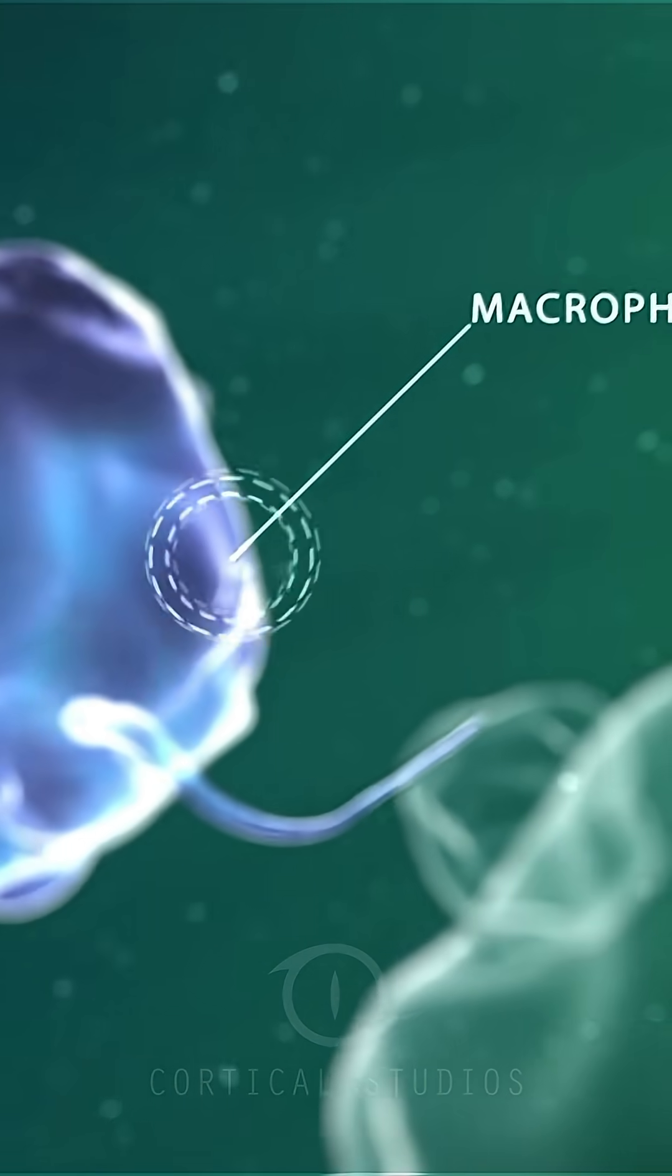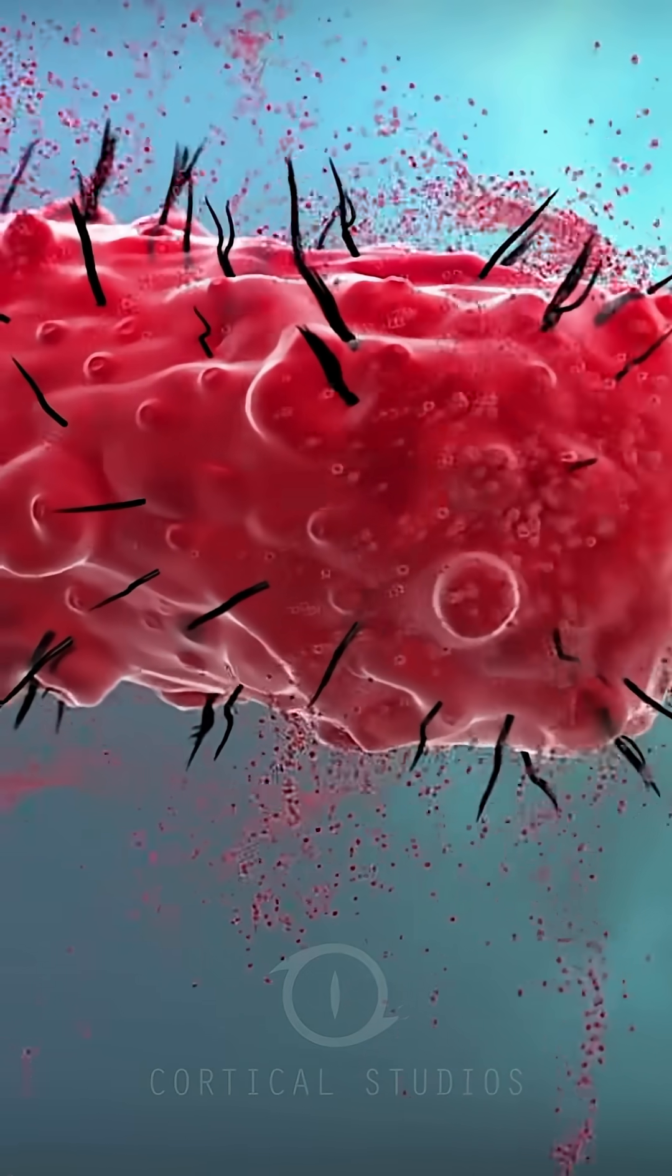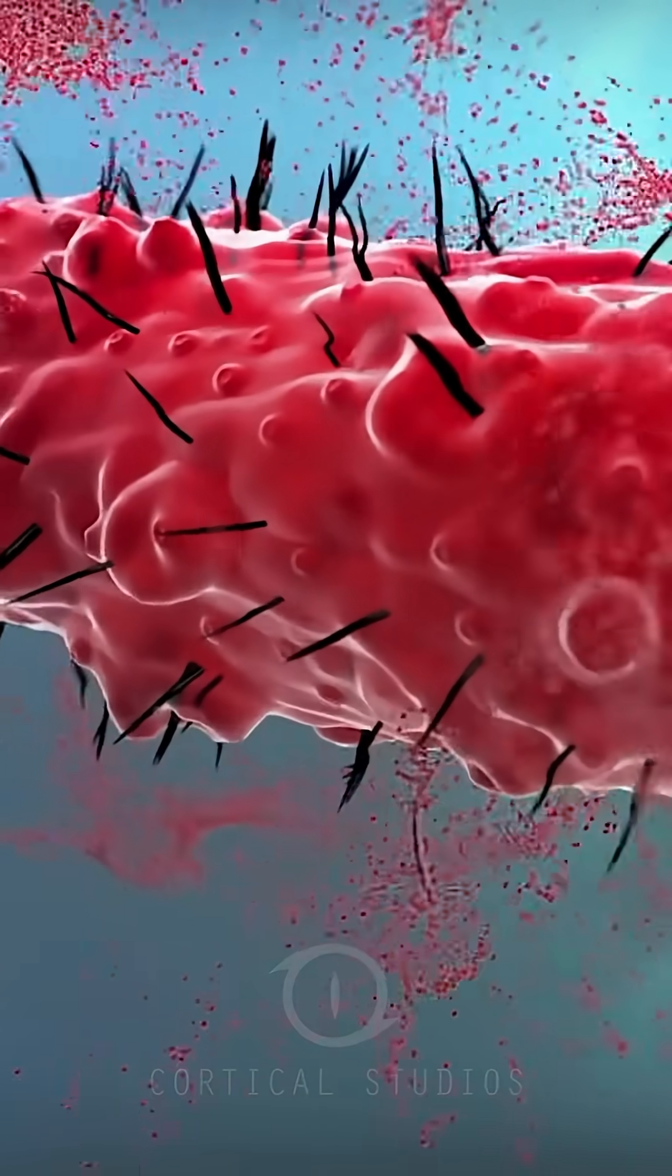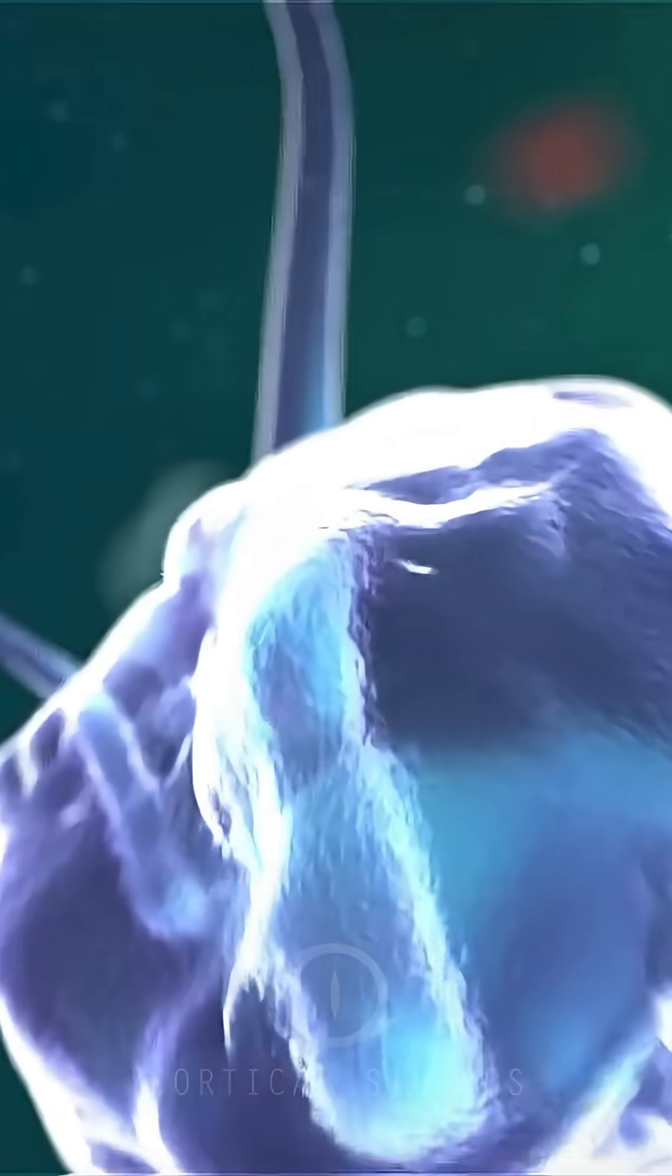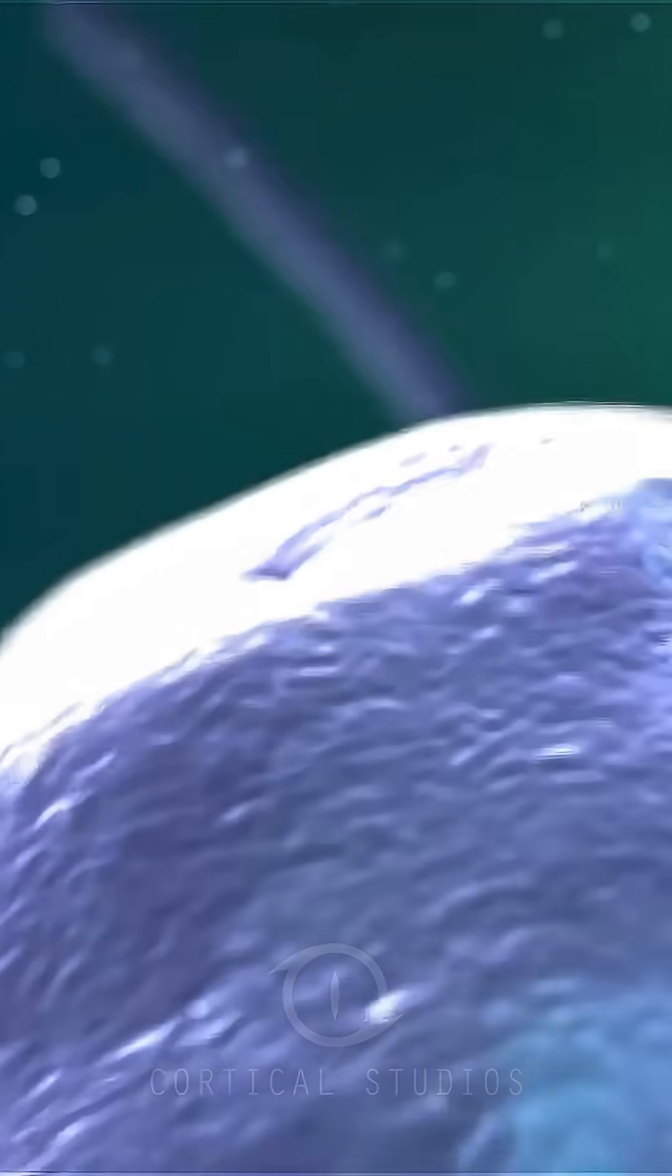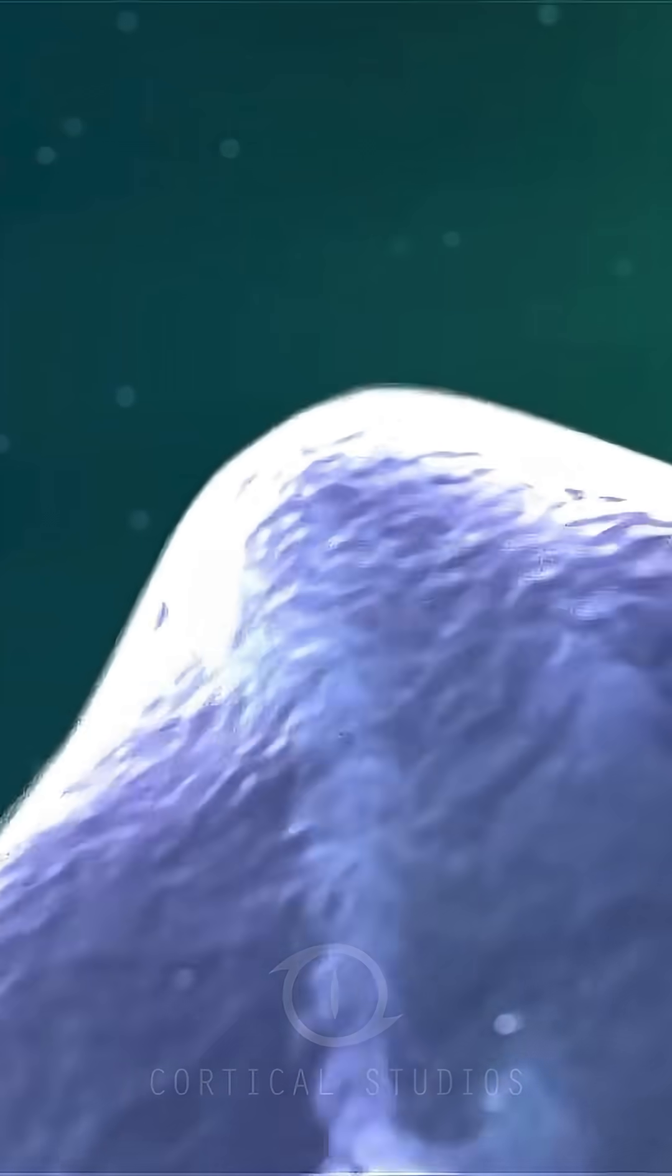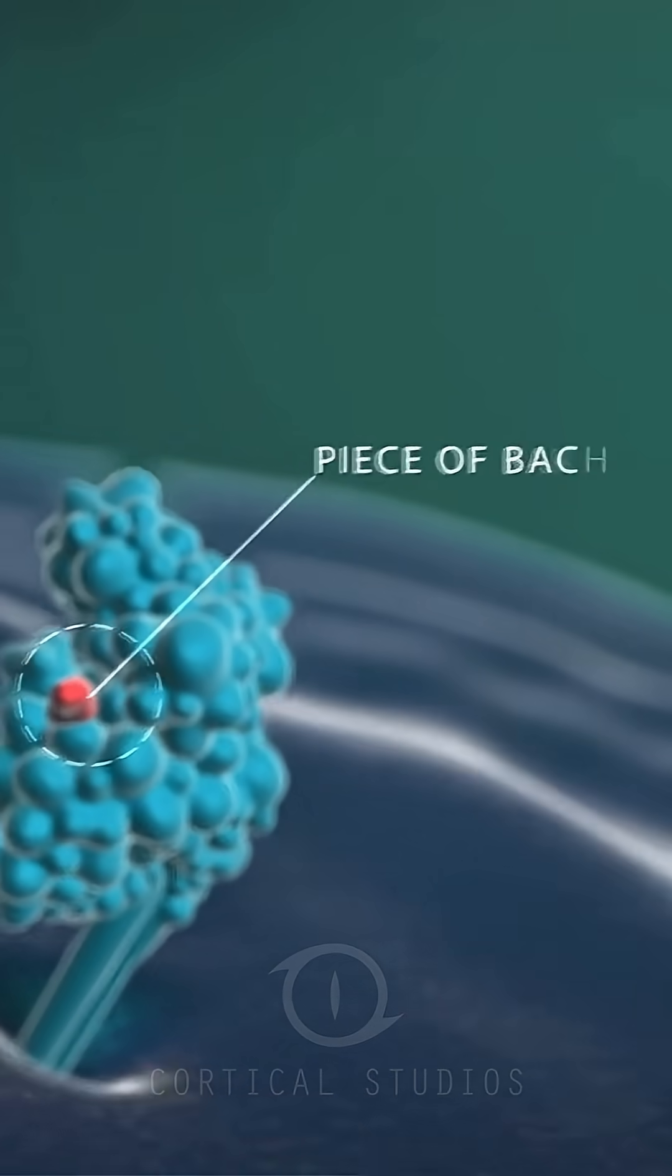The macrophage recognizes the bacterium as a non-self substance and engulfs it. The bacterium is slowly destroyed in the macrophage until only very small pieces are left. These little pieces of bacterium are made visible on the outside by the macrophage. This way, the other cells of the immune system are able to notice that a bacterium has entered the body.